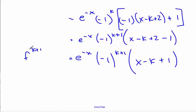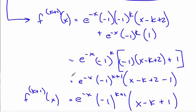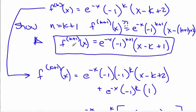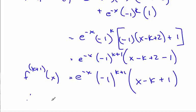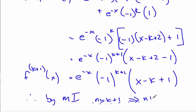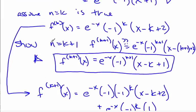This is exactly the k plus 1th derivative I was hoping to show. Therefore, by mathematical induction — since n equals k plus 1 is true whenever n equals k is true, and since n equals 1 is true — the formula is proven true. Write this out carefully, but that's the general idea: find the first four derivatives, establish the pattern, then prove it with induction.